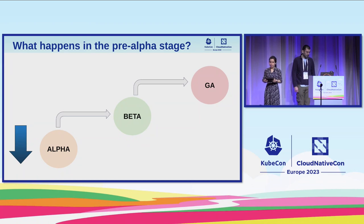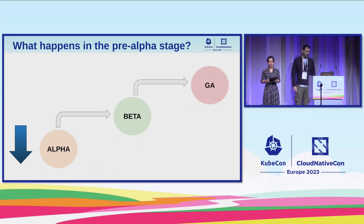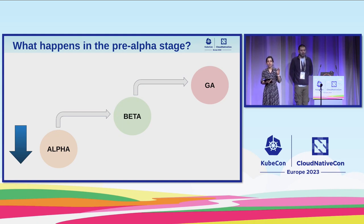At the pre-alpha stage, you should determine if the change you're making is significant or a small change. If the change is small enough, you can go ahead and submit a PR, perhaps have a discussion in the community via Slack or SIG meeting. But if the change is significant enough, it means you have to write something called a KEP. It's important to check with the SIG if writing a KEP makes sense, or if the change can be made without one.